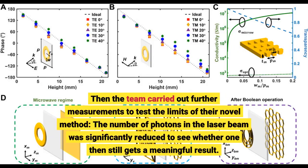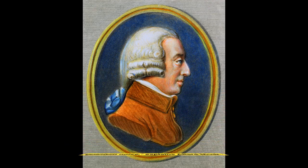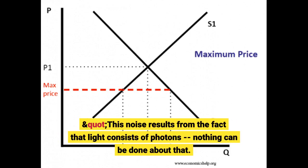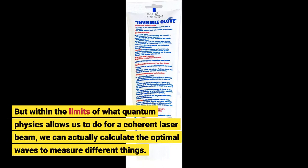The team then carried out further measurements to test the limits of their novel method. The number of photons in the laser beam was significantly reduced to see whether one still gets a meaningful result. In this way, they were able to show that the method not only works, but is even optimal in a physical sense. We see that the precision of our method is only limited by the so-called quantum noise, explains Allard Mosk. This noise results from the fact that light consists of photons — nothing can be done about that. But within the limits of what quantum physics allows for a coherent laser beam, we can actually calculate the optimal waves to measure different things.